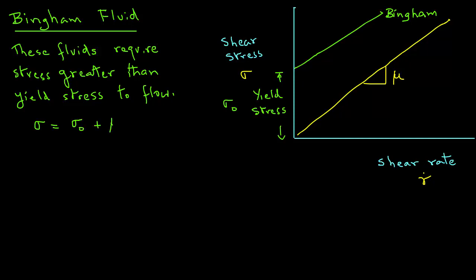The model here is sigma equals sigma zero plus mu_p times gamma dot. We use the subscript p with mu to identify this viscosity for Bingham fluids as the plastic viscosity, and many times these fluids are also called Bingham plastics.